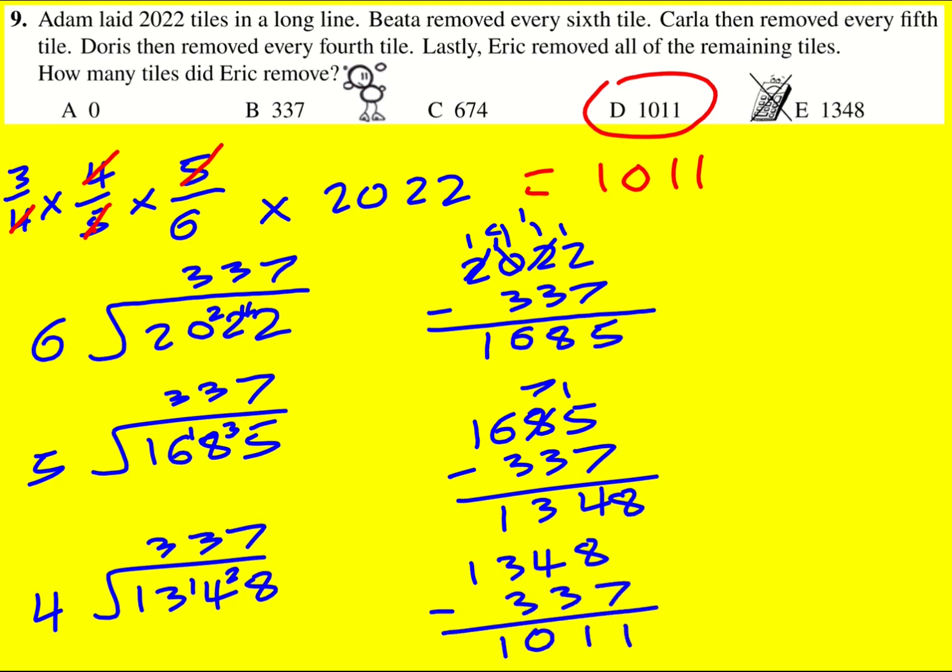And that gives us that one thousand and eleven as before. Now why do we get three three seven each time? Of course we have to, because we basically have split the tiles into these little groups of six, and when we take one-sixth of them away we were taking away 337 and we're left with these fives. Of course, we then take a fifth away—it's still one-sixth of the original amount, so it's another three three seven.